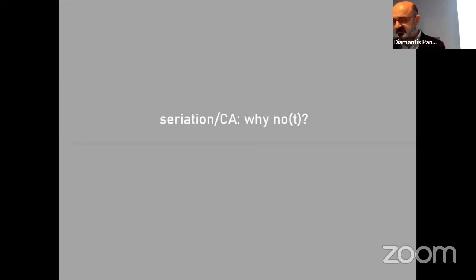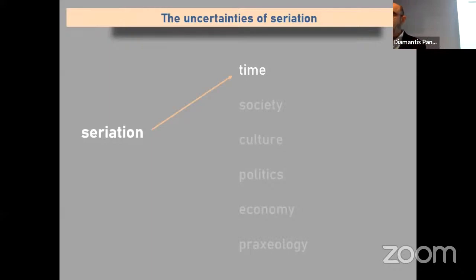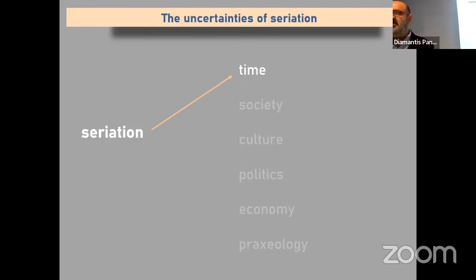When talking about alternatives, the first strong candidate is seriation by the method of correspondence analysis. Can seriation help when applied in the Minoan context? Yes, but only at a local, intra-site level. The main uncertainty of seriation is its unimodal character, forcing us to correlate occurrence or frequency of different pottery only with time. The method cannot acknowledge and process the impact of society, culture, politics, economy, or praxeology in an ancient culture — yet all these factors could have heavily determined the composition of a pottery assemblage.